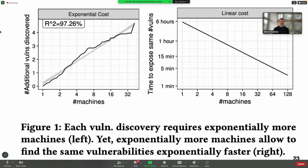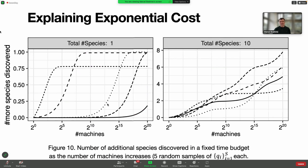This is an empirical law. We looked at a lot of data. This is an exponentially increasing number of machines on a log scale, and this is the number of additional vulnerabilities discovered within the same time. We see that a linear increase in new vulnerabilities requires an exponential increase in the number of machines. This is the exponential cost.